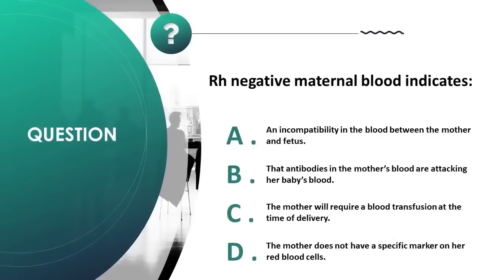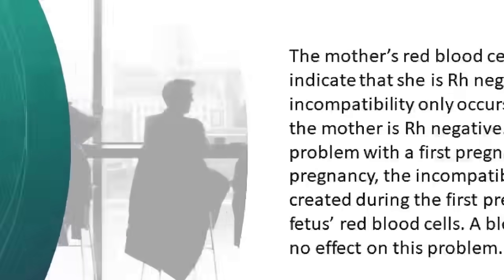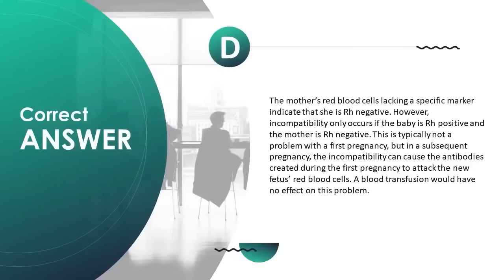Rh-negative maternal blood indicates: A) an incompatibility between mother and fetus, B) antibodies in the mother's blood attacking the baby's blood, C) the mother will require a blood transfusion at delivery, D) the mother does not have a specific marker on her red blood cells. Correct answer is D. The mother's red blood cells lacking a specific marker indicate that she is Rh-negative.